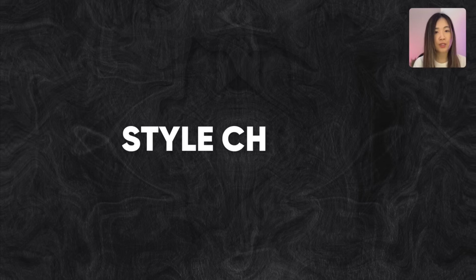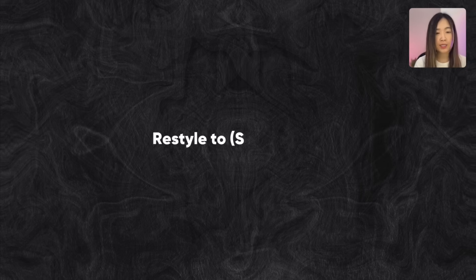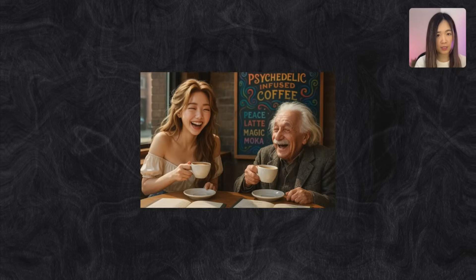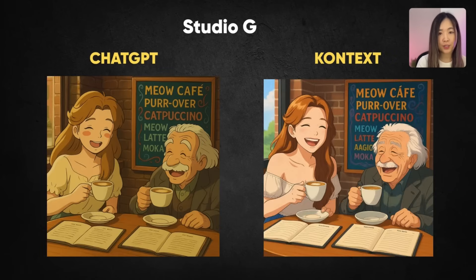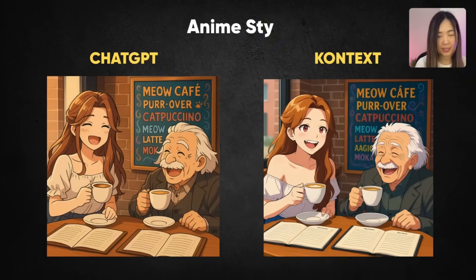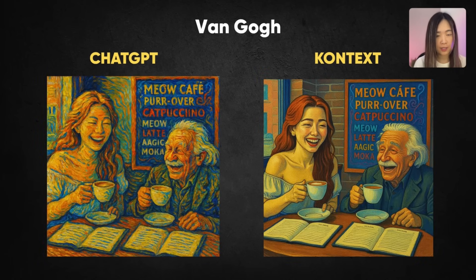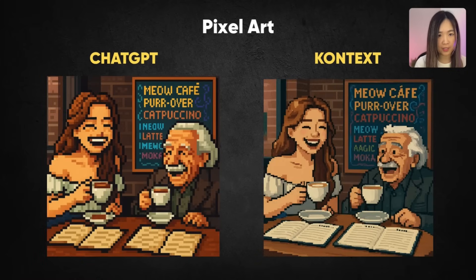We can also change our image into different styles — simply say 'restyle to' and then the style name. Both models were tested on Simpsons style, Studio Ghibli, anime style, Van Gogh style, and pixel art style. ChatGPT understands Van Gogh a lot better than Context.